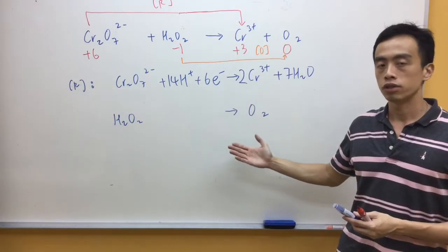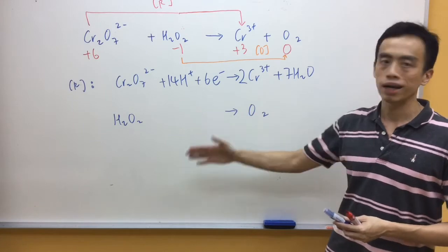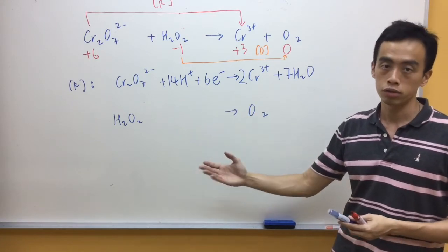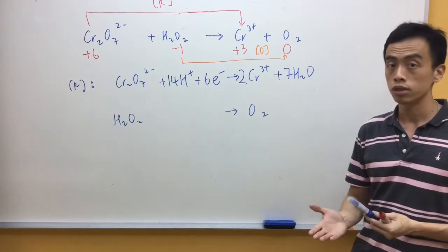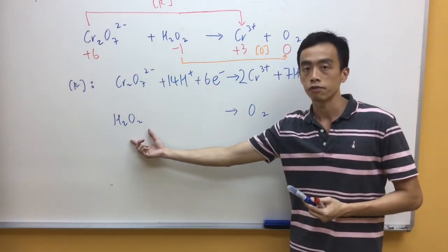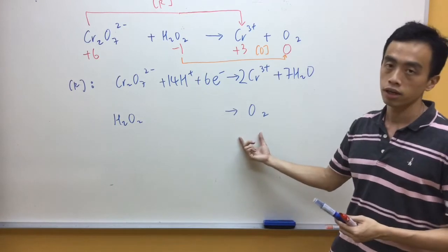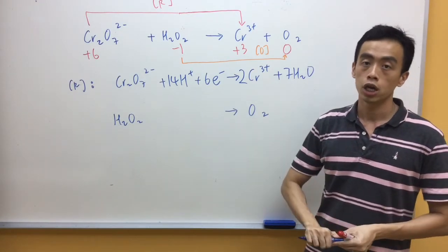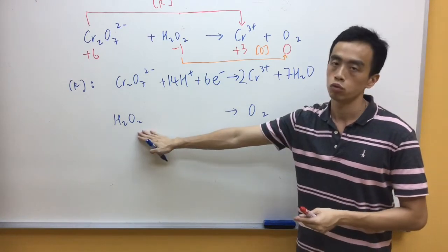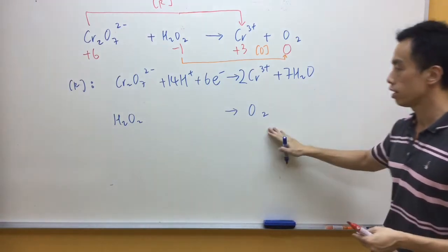Now for the second half equation the idea is the same. Now there are no other elements other than hydrogen and oxygen, so straight away we will jump to the second step. We will balance oxygen using water. What you notice in this case is there are 2 oxygens on the left hand side, 2 oxygens on the right hand side, so oxygen is balanced. So the third step will be balancing hydrogen using H+. Left hand side I have 2 hydrogen, right hand side I need 2 H+.